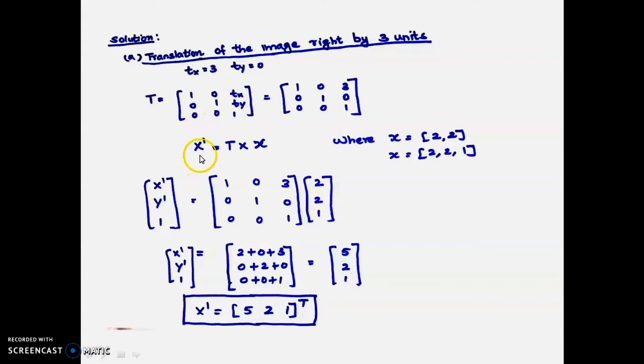The equation is x' = T × x, where T is the transformation matrix which we already got, and x is the image point. We multiply T into x to get the new coordinates x', y', 1. Write the transformation matrix [1 0 3; 0 1 0; 0 0 1] and the image point [2, 2, 1].